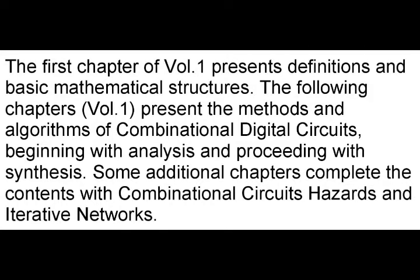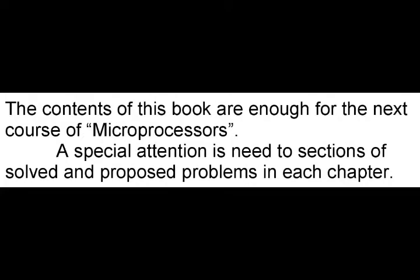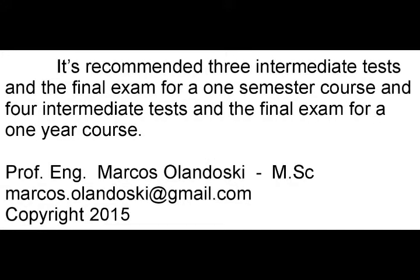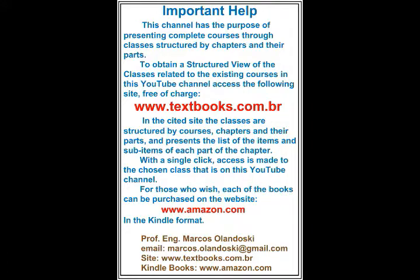The first 12 chapters are presented in Volume 1 and refer to Combinational Digital Electronics. The six following chapters are in Volume 2 and refer to Sequential Digital Electronics. Through the set of 18 chapters, the course starts with zero knowledge in the Digital Electronics area and ends at a point where the next course may be a course on microprocessors. The second volume presents topics related to Sequential Digital Electronics circuits, both asynchronous and synchronous types.